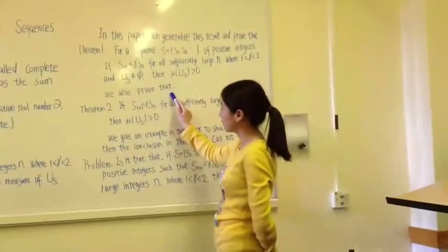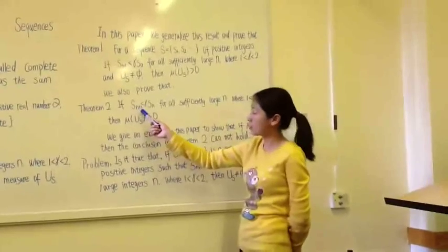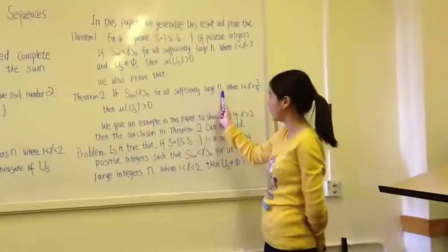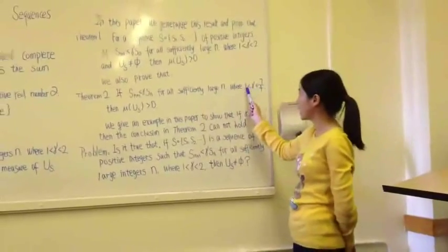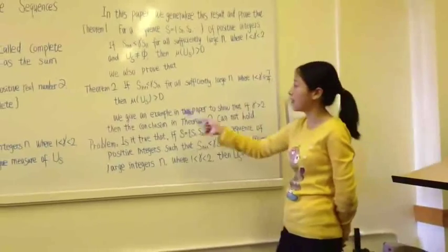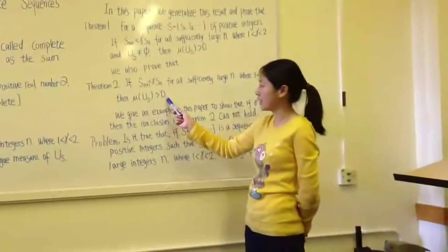We also proved that if S(n+1) is less than gamma times Sn for all sufficiently large n, where gamma is larger than 1 and no less than 7 over 4, then the measure of mu S is larger than 0.